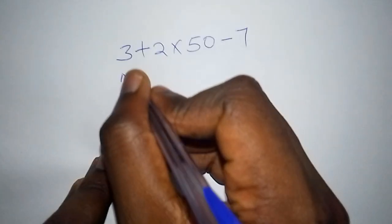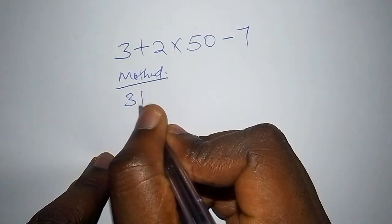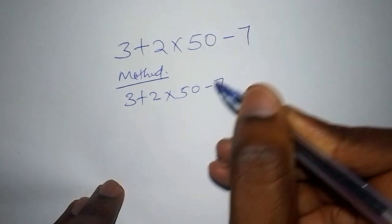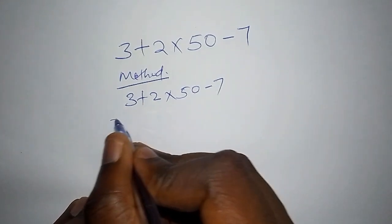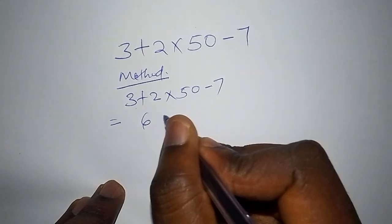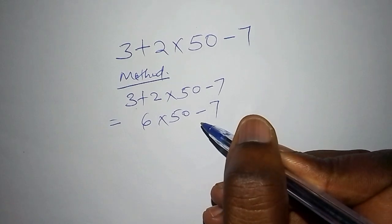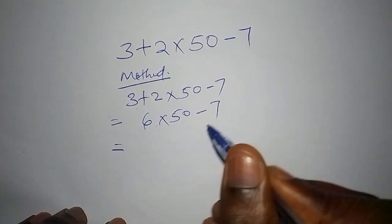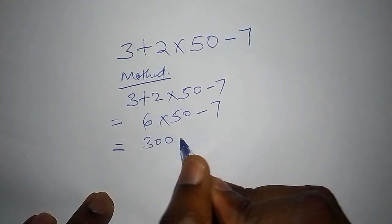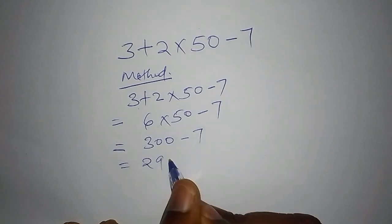So the method that they used, the first method was that they took it this way. They had 3 added to 2 multiplied by 50 subtract 7. So what they do, they say that this one equals 3 plus 2, and then they got it as 6, then multiply by 50 subtract 7. Then the next part was that they now said that 6 multiplied by 50 is 300 subtract 7, and their answer was 293.